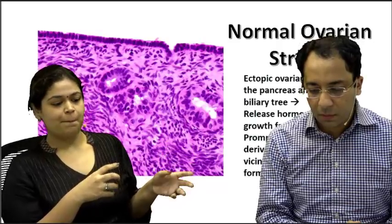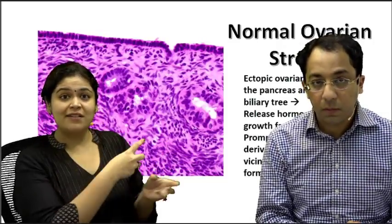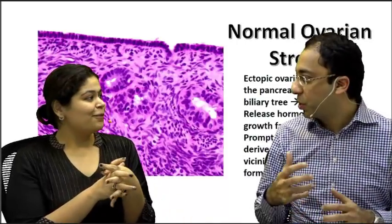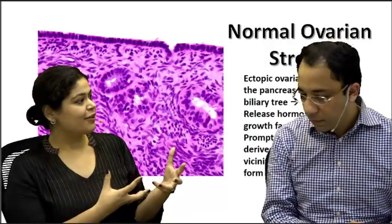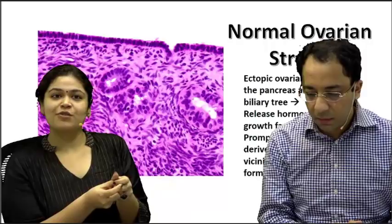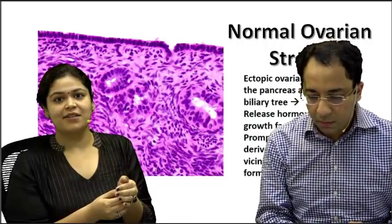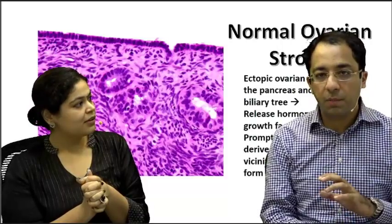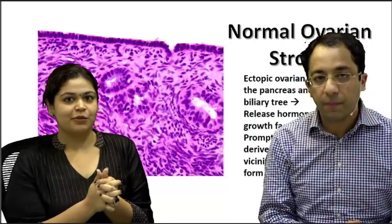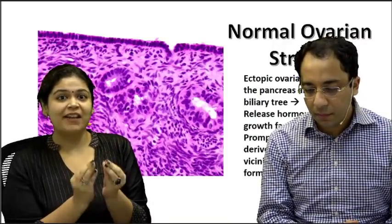There is a theory that while the gonads are descending, there is ectopic ovarian stroma somewhere along the pancreas and biliary tree. This stroma is responsive to hormones and releases hormones, causing proliferation of epithelium in response to hormone activation. Comparing normal ovarian stroma with the cystic stroma, this tissue is ER-positive and PR-positive, which explains why we classically get this in females. It's very surprising to see ovarian stroma in a pancreatic lesion.